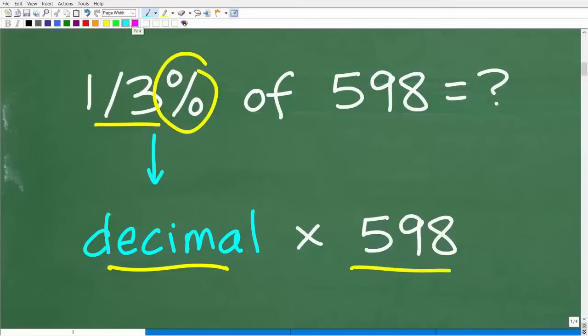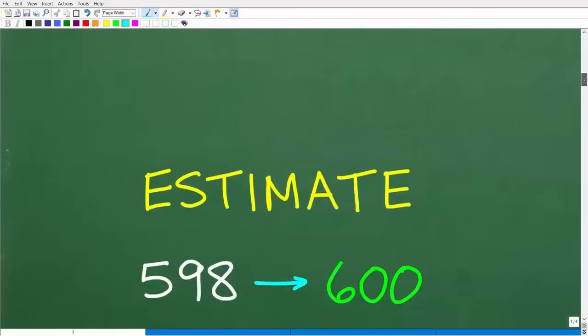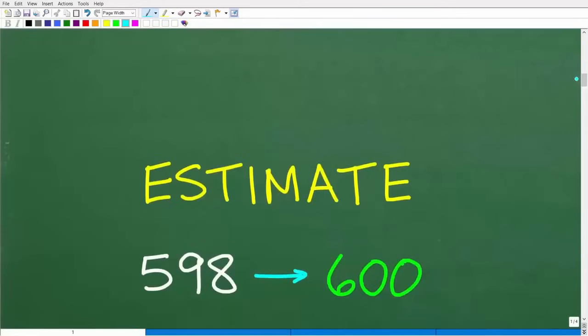The easiest way to make this a manageable problem for us to do in our brain is to fix this number right here. We have 598, and we want a reasonable estimate. What number is this pretty close to? Well, if you said 600, that is absolutely correct. So instead of doing this problem using 598, let's just round up to 600. That's going to make things much easier. So the new equivalent problem will be one-third percent of 600.